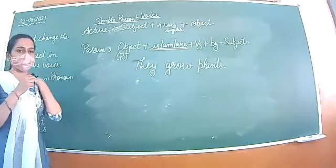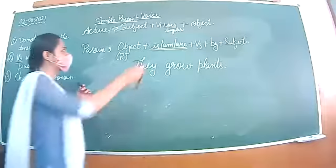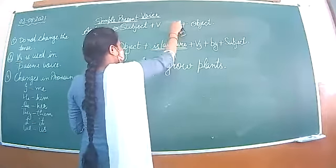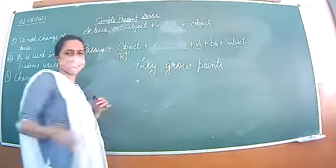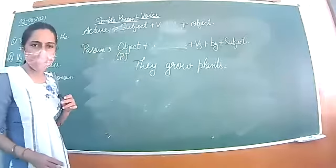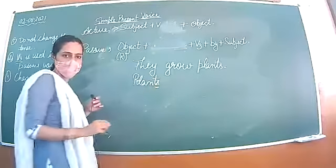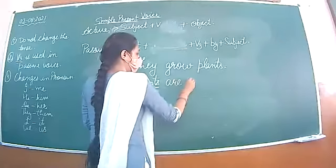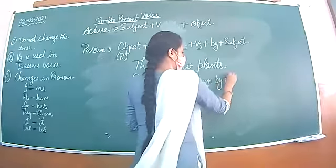Another example: 'They grow plants.' Change to passive: 'Plants are grown by them.' Notice that 'plants' is plural, so the verb changes accordingly — 'are grown' not 'is grown.'